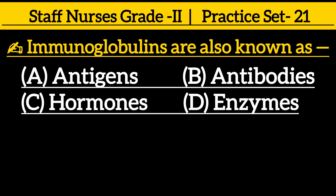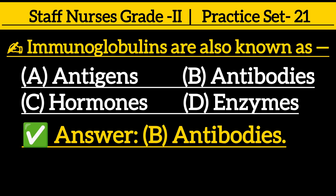Immunoglobulins are also known as: Option A, antigens; Option B, antibodies; Option C, hormones; Option D, enzymes. Correct answer is Option B, antibodies.